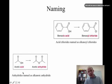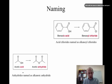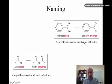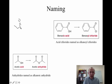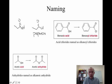Quickly, I'm just going to go over how you name these things, because you might see these names periodically cropping up. Acid chlorides are going to be called alkenoyl chloride. So this is called benzoic acid — its acid chloride is called benzoyl chloride. In a simpler example, this molecule is called propanoic acid, and so the acid chloride would be called propanoyl chloride.